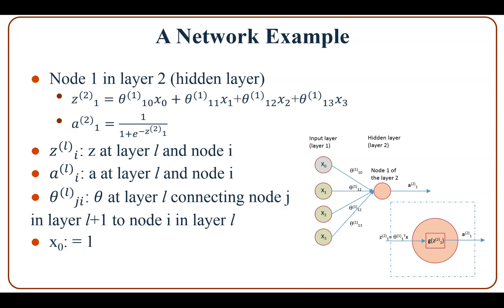Layer one is the input layer containing the nodes, features, or attributes from the instances. Now look at layer two — layer two is a hidden layer. We look at node one, so this is node one in layer two. z²₁ means z at layer two, node one. It equals theta¹₁₀ — that is, theta at layer one connecting node one in layer two to node zero in layer one.